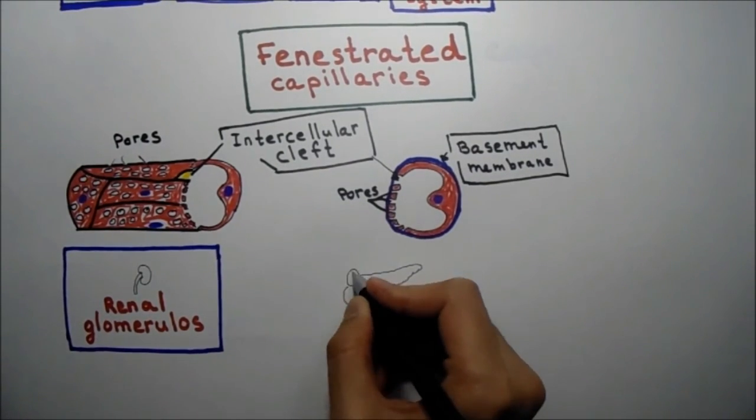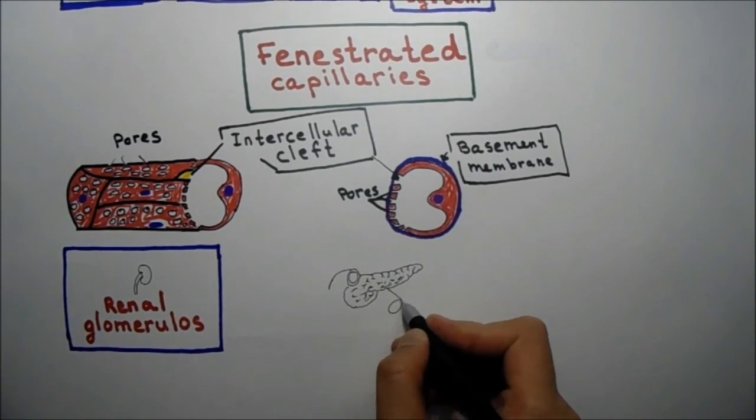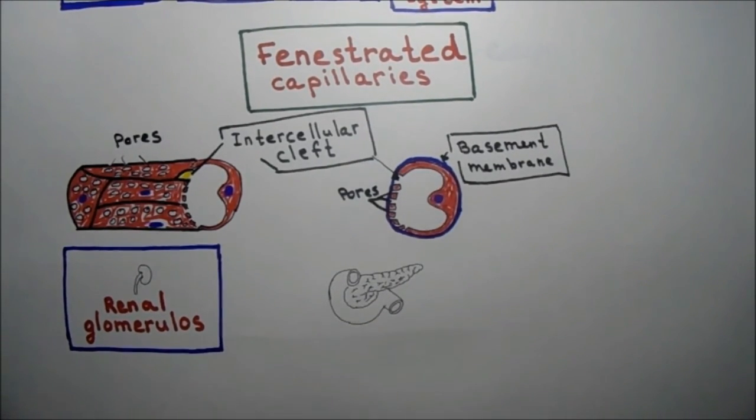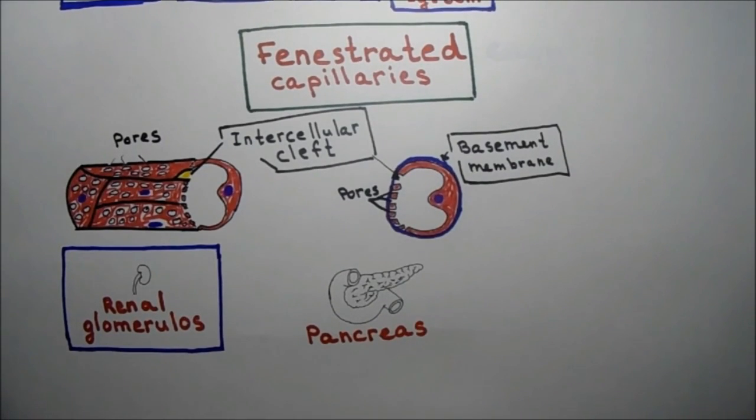And also they are located in the pancreas because the pancreas produces insulin and glucagon which are peptide hormones having large size. That's why we need to have these pores allowing them to be released to the bloodstream. Well actually all glands which produce peptide hormones have fenestrated capillaries due to releasing large molecules of peptide hormone. Here we do not have continuous capillaries because large molecules cannot pass through this type of capillary. So intestines also have this type of capillary.